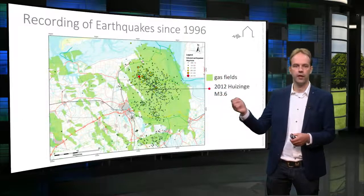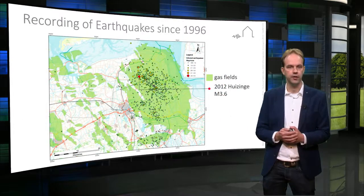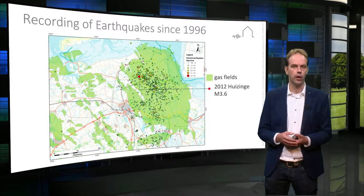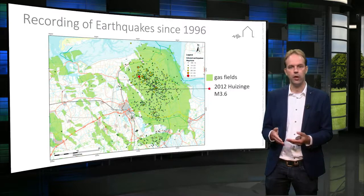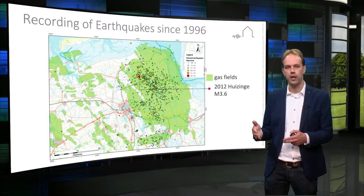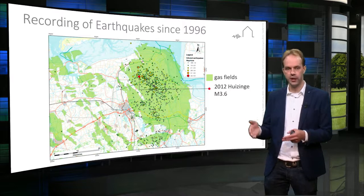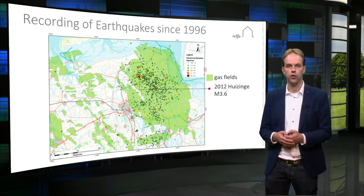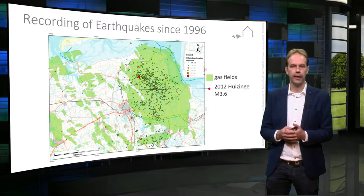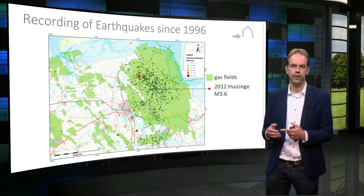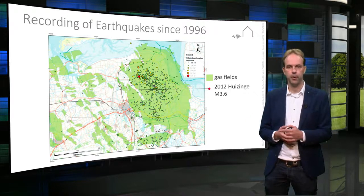Gas was discovered in the Groninger field in the 1950s, and after decades of gas extraction seismicity started to occur. This seismicity is due to a decrease in the gas pressure in the reservoir, and the reduction in gas pressure has led to compaction within the reservoir, which in turn has caused the pre-existing faults and fractures to occasionally move. The largest earthquake recorded in the Groninger gas field so far was in August of 2012 in Huizinga, with a moment magnitude of 3.6.